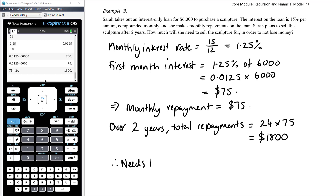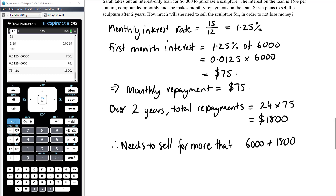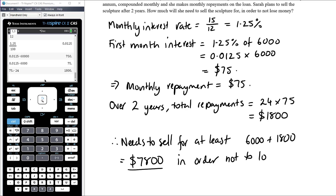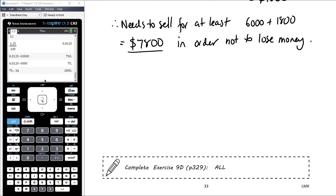She's going to have made repayments totalling $1,800 over the two years she's owned the sculpture. Therefore, she needs to sell for more than $6,000 plus $1,800, which equals $7,800. She needs to sell for at least $7,800 in order not to lose money — if she sells for any less than that at the two-year mark, she'll have lost money overall. Exercise 9D covers interest-only loans.